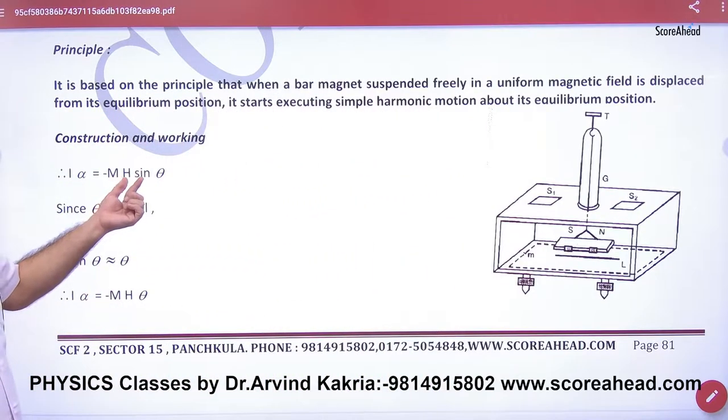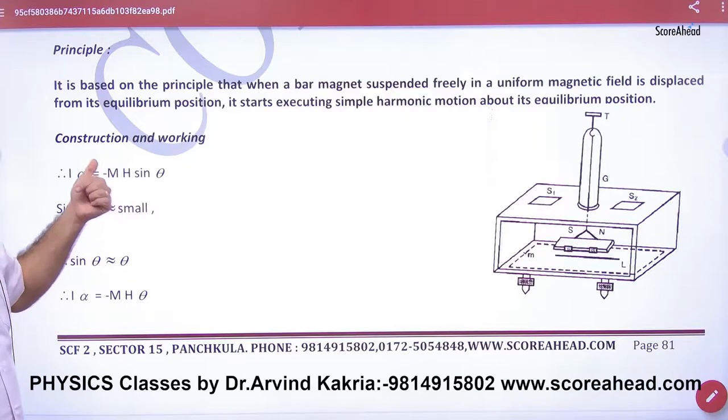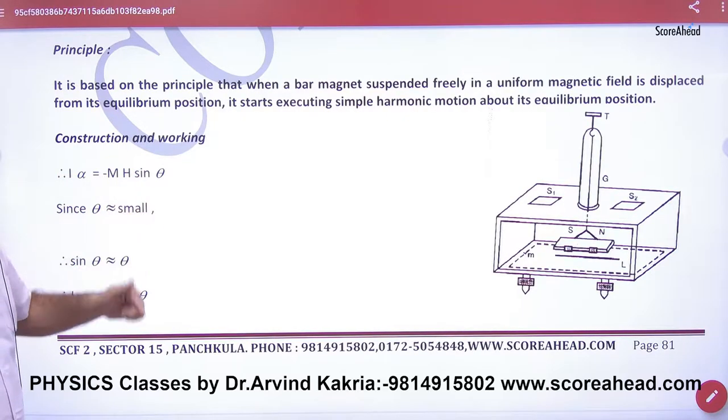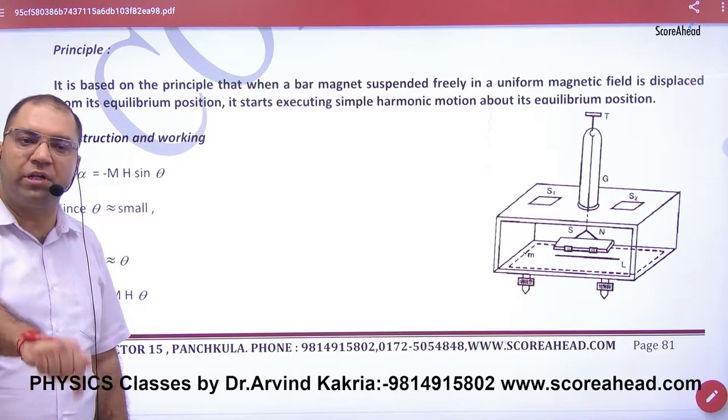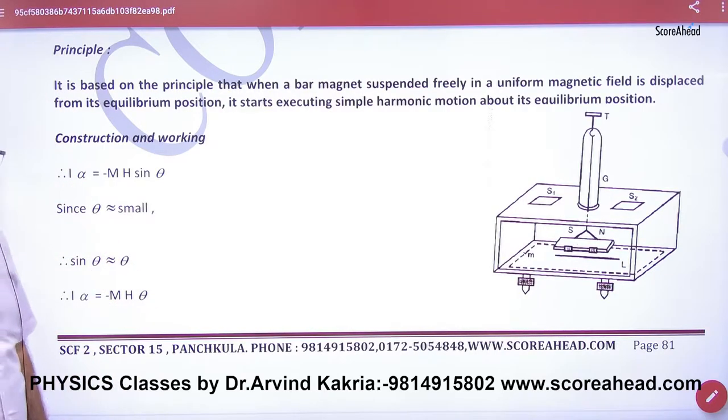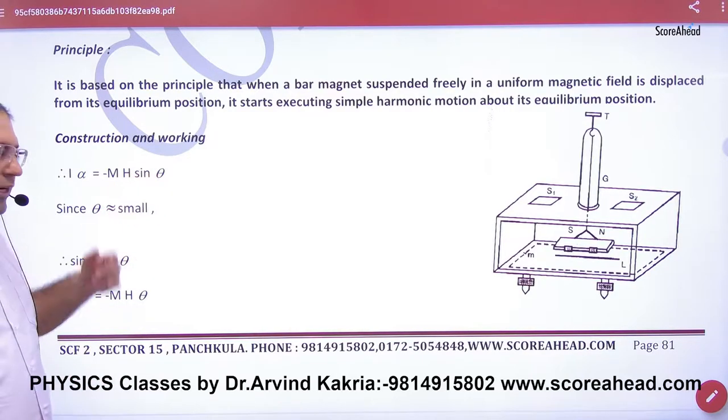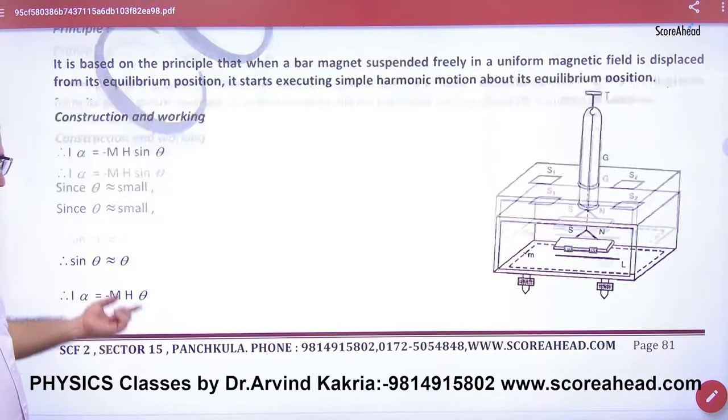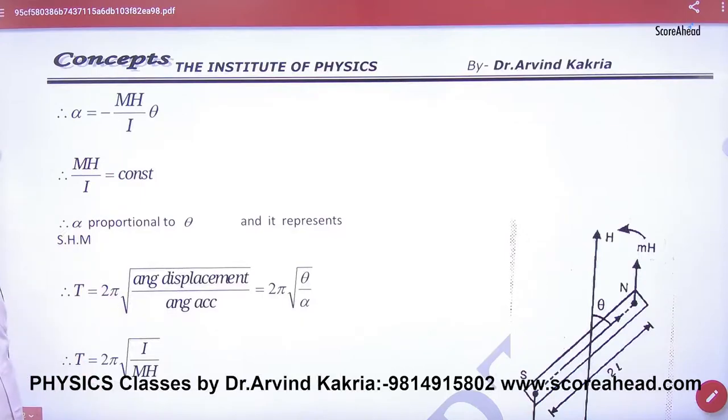For restoring torque: minus MB sin theta, minus MH sin theta. With rotational motion, torque was I times alpha where I is moment of inertia. Angle is small, sin theta can be written as theta. So alpha and theta are directly proportional with negative sign, so this is SHM.